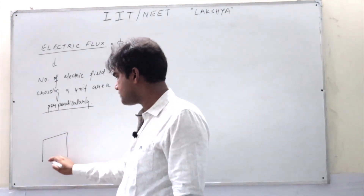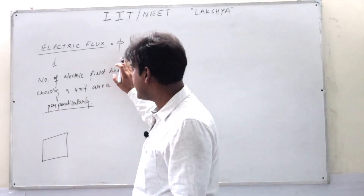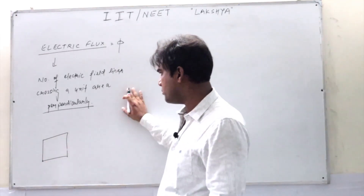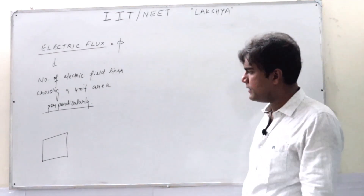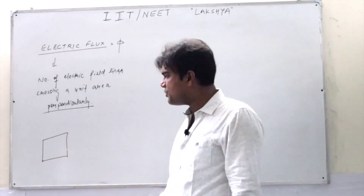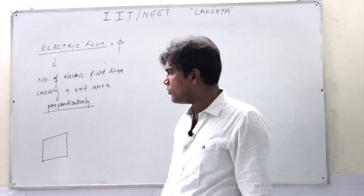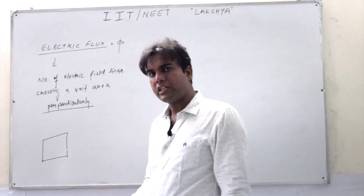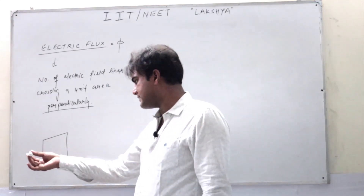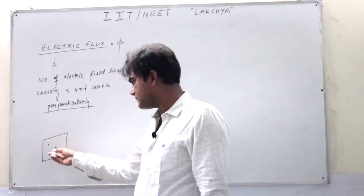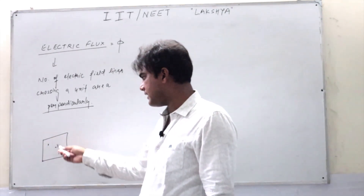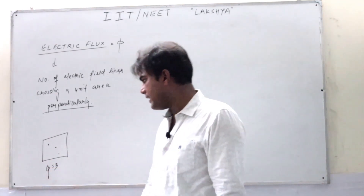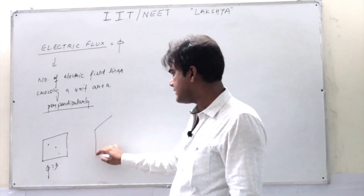Let us say you are taking this board — a rectangular board — and you have cut a small square in it. Now which lines do we have to count? We need to count only the lines which are perpendicular to this surface. These lines which are crossing it perpendicularly — let's say three lines are passing — so flux will become three.